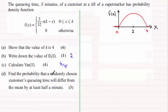So when it comes to working out the probability that a randomly chosen customer's queuing time will differ from the mean by at least half a minute, that means if we take half a minute off the mean of 2 minutes, that's going to be 1 and a half minutes or 3 over 2, and if we add half a minute to 2, that's going to be 2 and a half minutes, and that's going to be the same as 5 over 2.